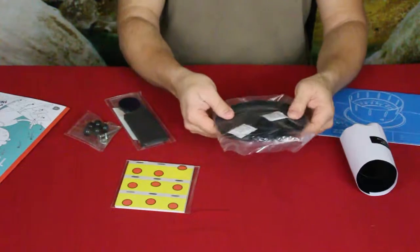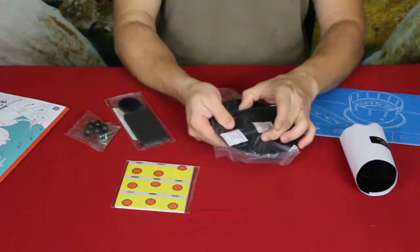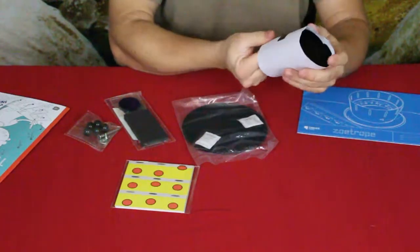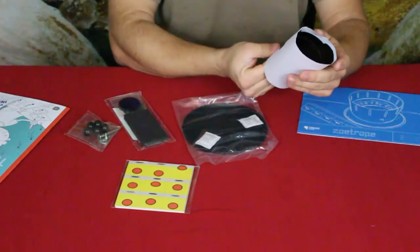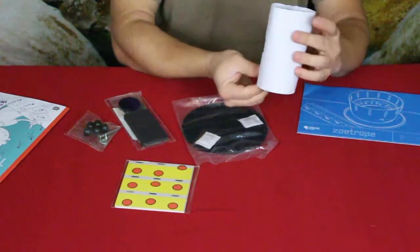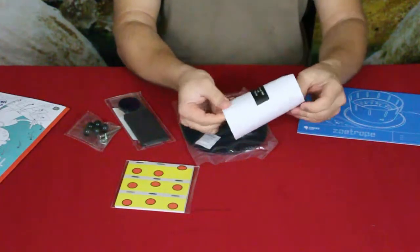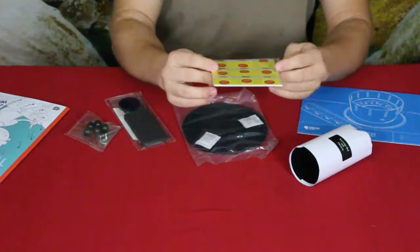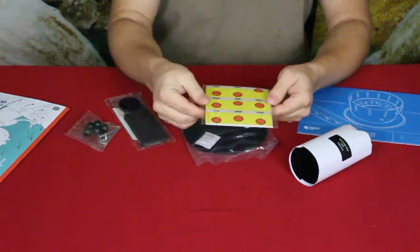We've got of course some discs right here - a smaller one and a larger one. We have this thing right here and it says it is the Zoetrope wall and film strip. So this will be, I'm sure, what's going to be kind of like the background or something. And then we've got this right here - a bunch of circles.